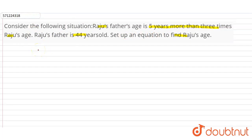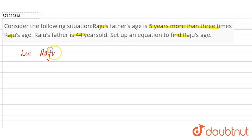So firstly, whatever we have to find in the question, we have to take that number or that age as x. So let Raju's age be x.